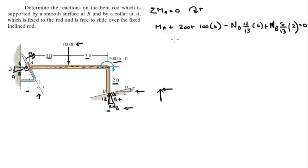So, this formula, when you clean it up a little bit, you make it look something like this. The moment at A minus 4.77 times the normal at B is equal to negative 500. So, let's call that our first formula.